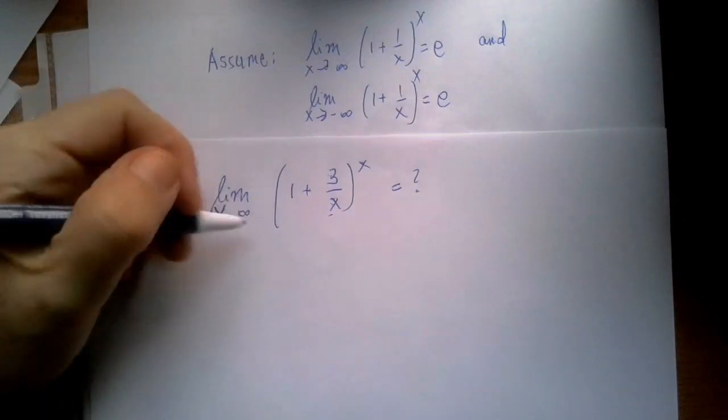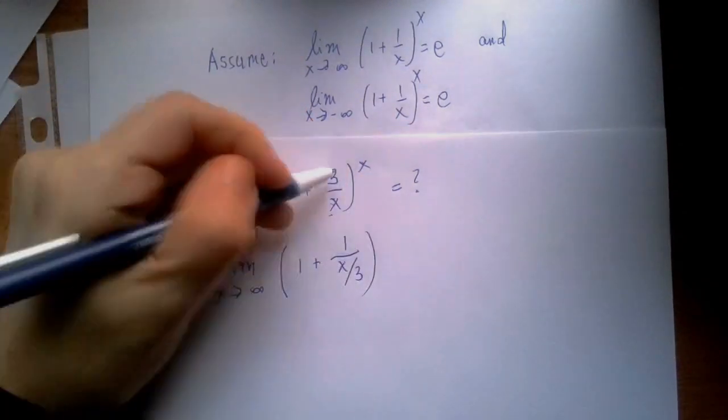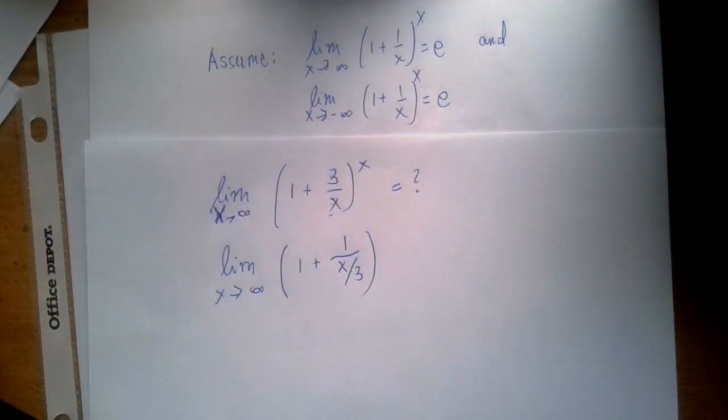So the first thing we're going to do, we're going to think of 3 over x as the reciprocal of x over 3. Now as x approaches infinity, so does x over 3.